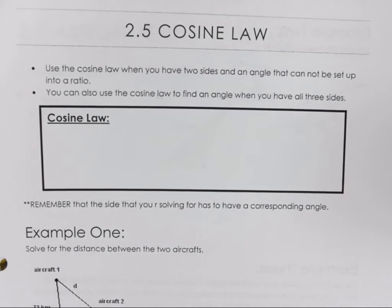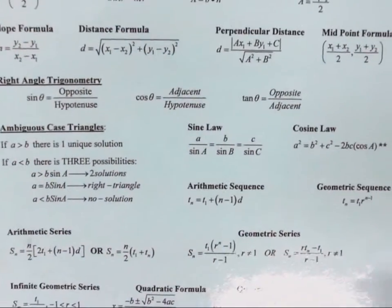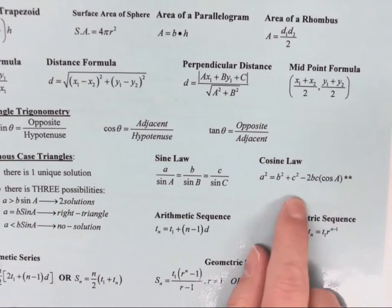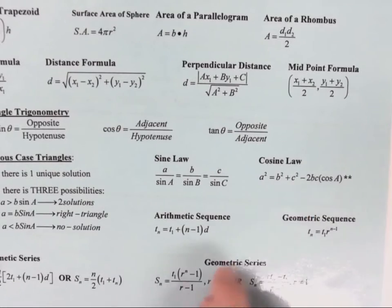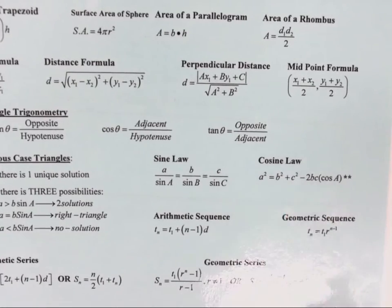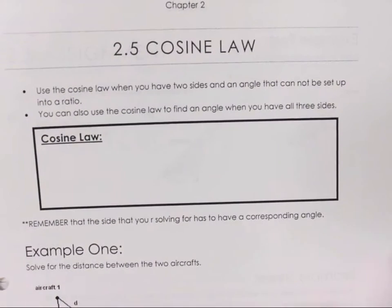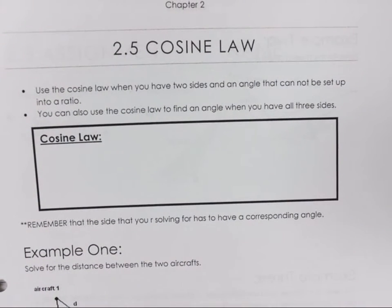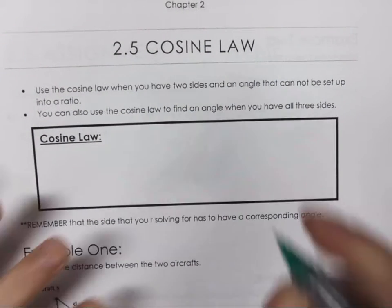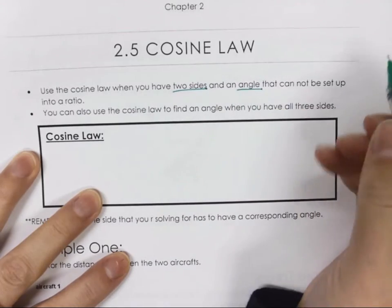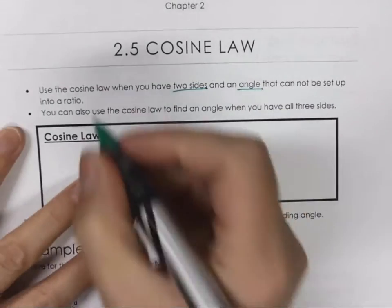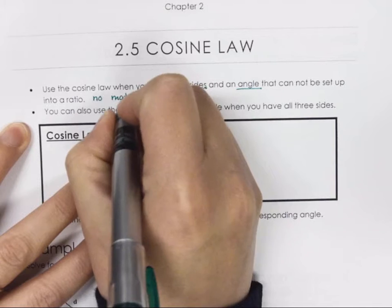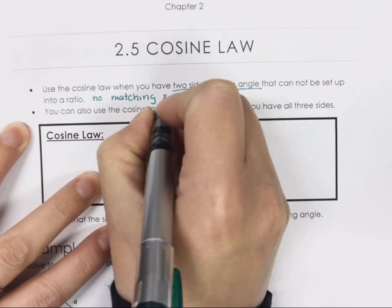Cosine law. Where did my formula sheet go? I'm going to grab a formula sheet for a second. Cosine law is already on your formula sheet. It is sine law and then cosine law.